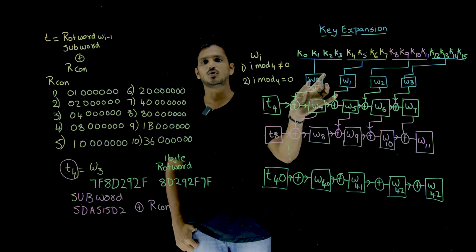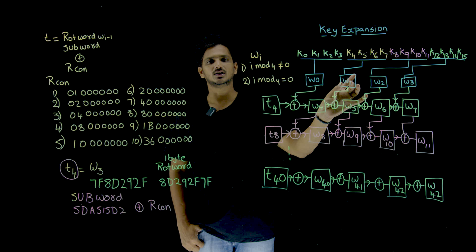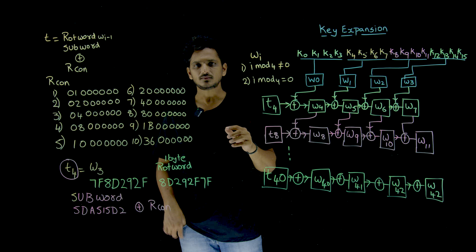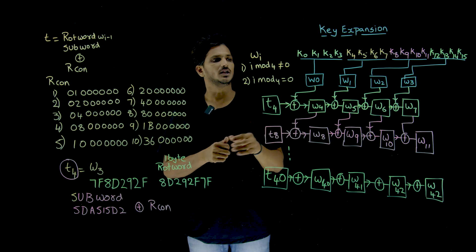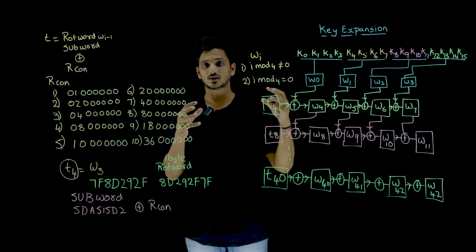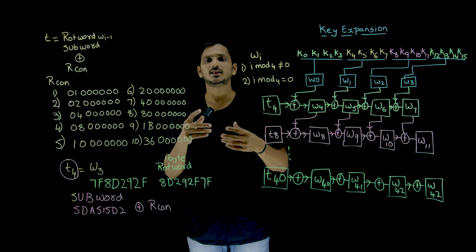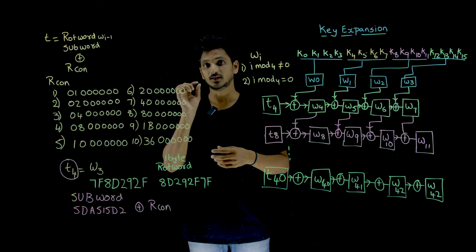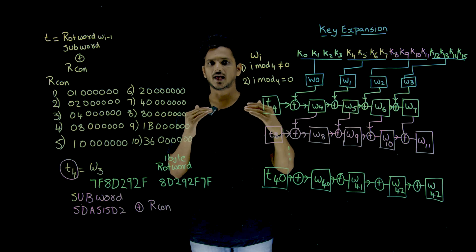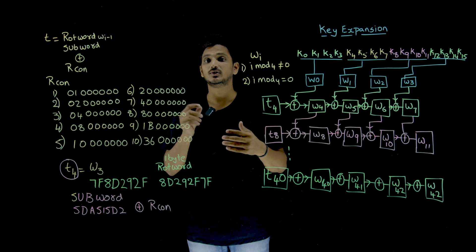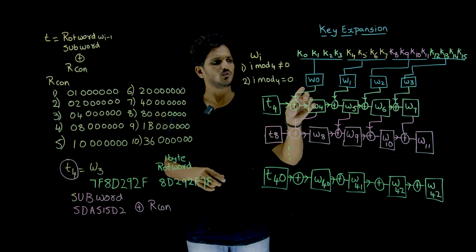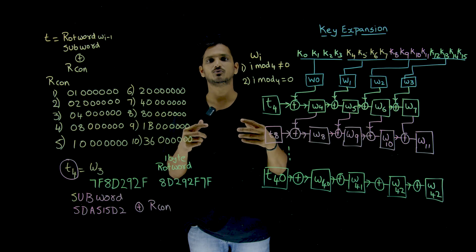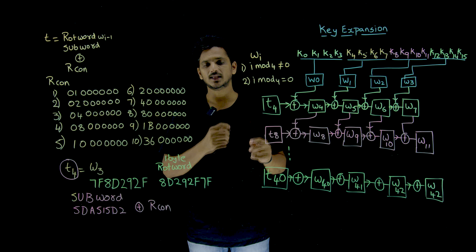The first 4 bytes we take as word W0, the second 4 bytes as W1, the third 4 bytes as W2, and the fourth as W3. So W0, W1, W2, W3 combined are used as the key in the first round, which is round N0. In the second round we are going to use W4, W5, W6, W7 — combined that is 128 bits — as the key in round N1.